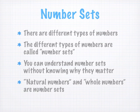The most important concept I want you to take away from this video is that there are different types of numbers. It's not important right now to understand why there are different types or why they're important. For now, just try to remember the fact that there are different types of numbers. These different types of numbers are called number sets. Natural numbers and whole numbers are two examples of number sets.